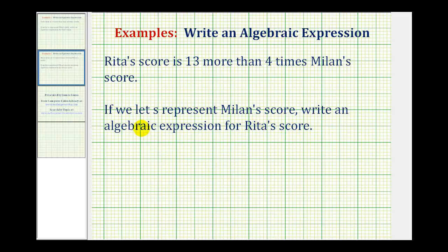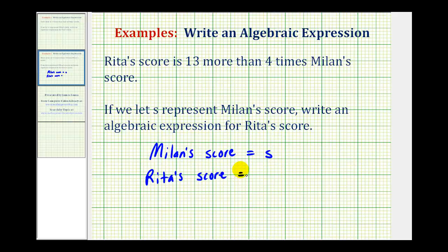So first we're letting Milan's score equal s, and we want an expression for Rita's score. We're told that Rita's score is thirteen more than four times Milan's score, or thirteen more than four times s. It's often helpful to look at this in reverse order, meaning we'll first deal with four times Milan's score, and then we'll deal with the thirteen more.